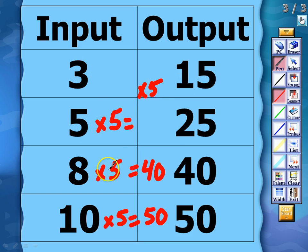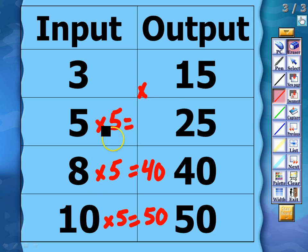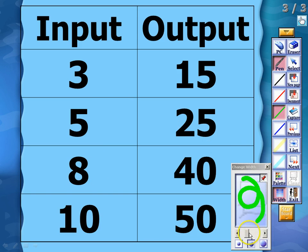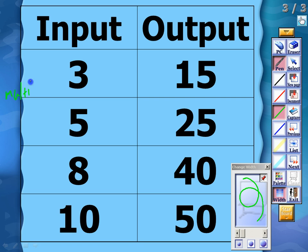Multiply by 5 works for each input and produces the correct output: 3 times 5 equals 15, 5 times 5 equals 25, 8 times 5 equals 40, and 10 times 5 equals 50. So the rule for this table is simply multiply by 5.